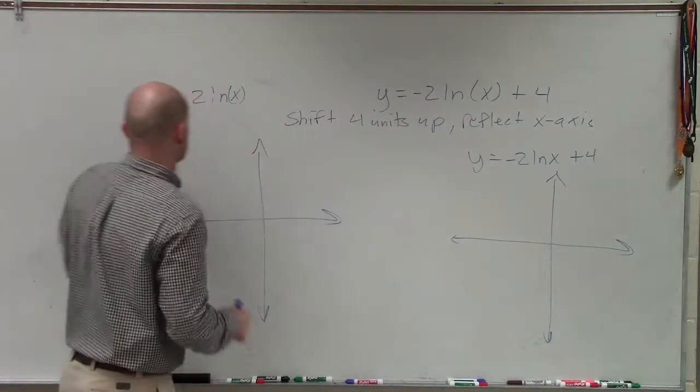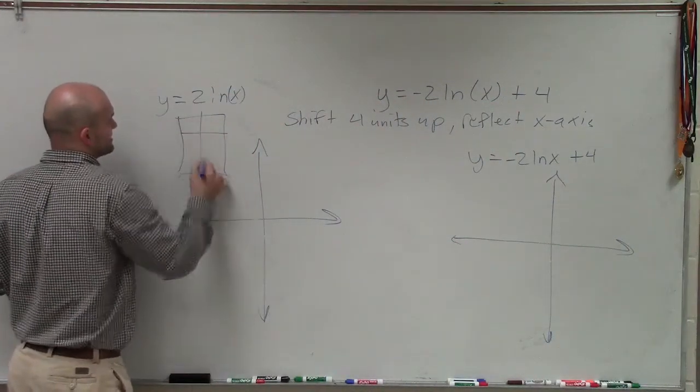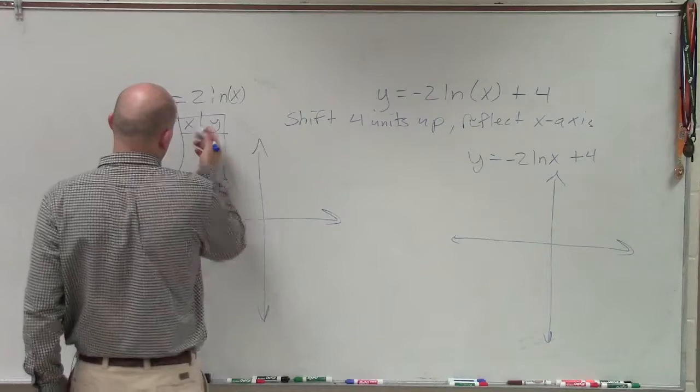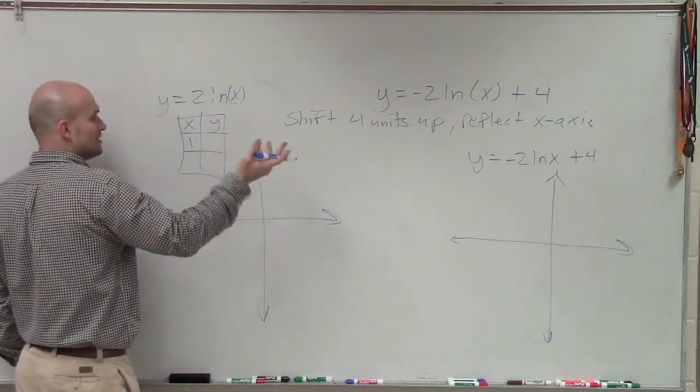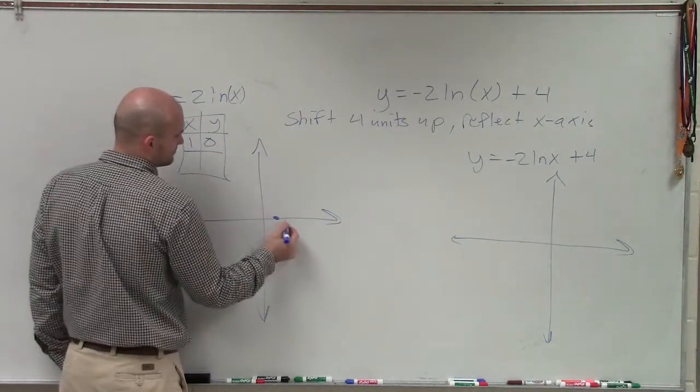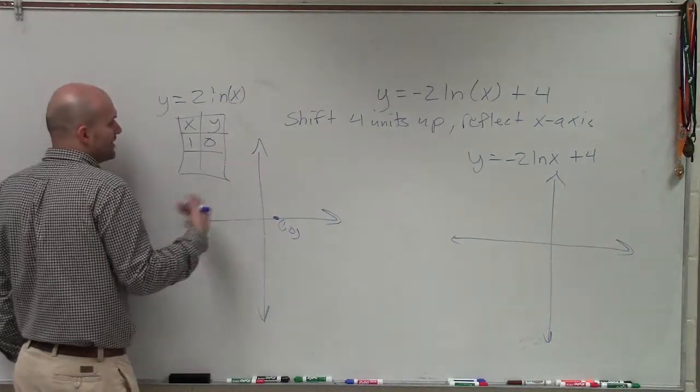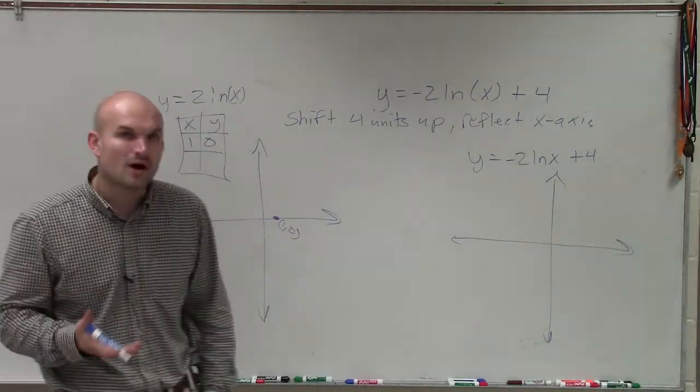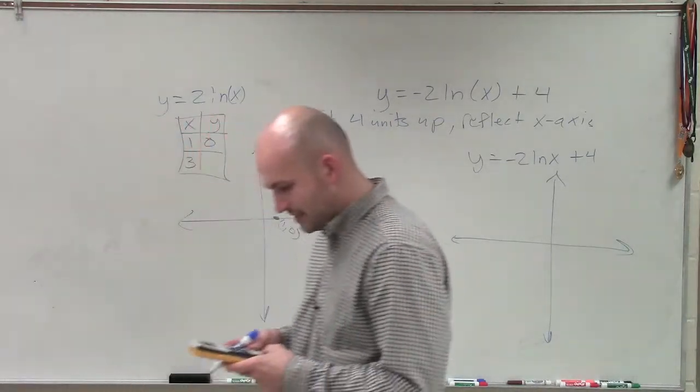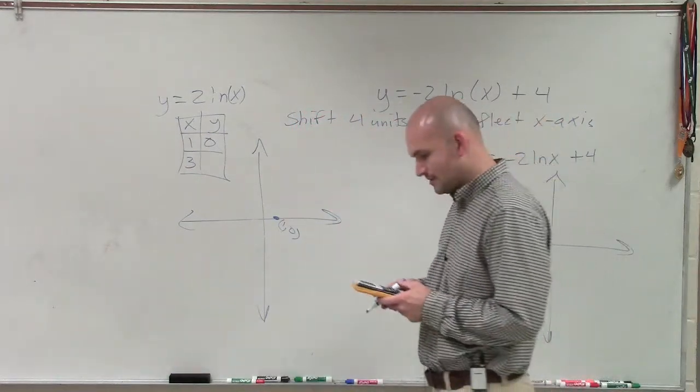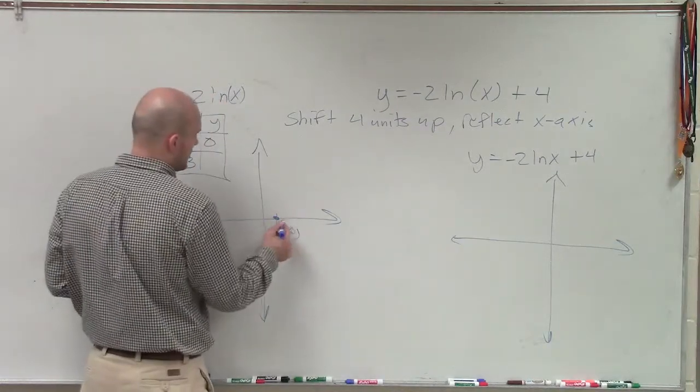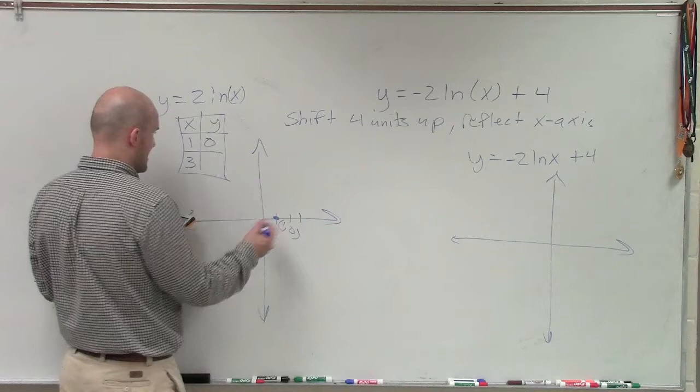So the first thing is we need to create a table to graph this. I like to make this simple. I'll determine what my values will be. If I plug a 1 in for x, ln of x equals 0, and 0 times 2 equals 0. So my graph is still going to cross at 1, 0. Then I can pick any point I want. Let's pick 3. So if I do 2 times ln of 3 to find the value, I'll plug it into my calculator and I get 2.197 dot, dot, dot. It's going to go on forever. I'm just going to approximate that at 2.2.